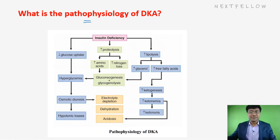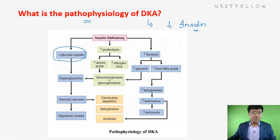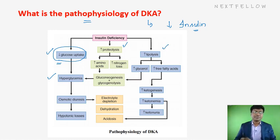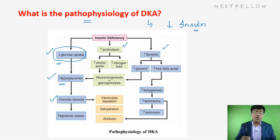Now the pathophysiology: in diabetic ketoacidosis there is severe insulin deficiency, which causes decreased glucose uptake by the cells, resulting in hyperglycemia. Because glucose is not available, the cell searches for alternate sources of energy — acquiring energy from proteins by proteolysis and from lipids by lipolysis. Meanwhile, hyperglycemia leads to osmotic diuresis.